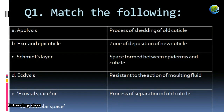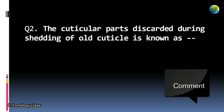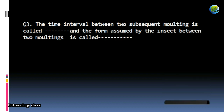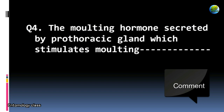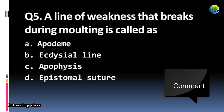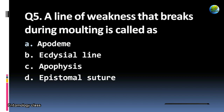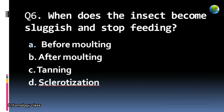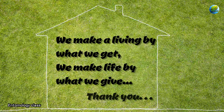Now let's move to the question part. Question one: match the followings. Question two: the cuticular parts discarded during shedding of old cuticles are known as? Question three: the time interval between two subsequent molts is called as ___, and the form assumed by the insect between two molts is called as ___. Question four: the molting hormone secreted by the prothoracic gland which stimulates molting. Question five: a line of weakness that breaks during molting is called — apotein, ecdyseal line, apophysis, or epistomal suture? Question six: when does the insect become sluggish and stop feeding — before molting, after molting, during tanning, or sclerotization? Comment your answers below and see you in the next class!